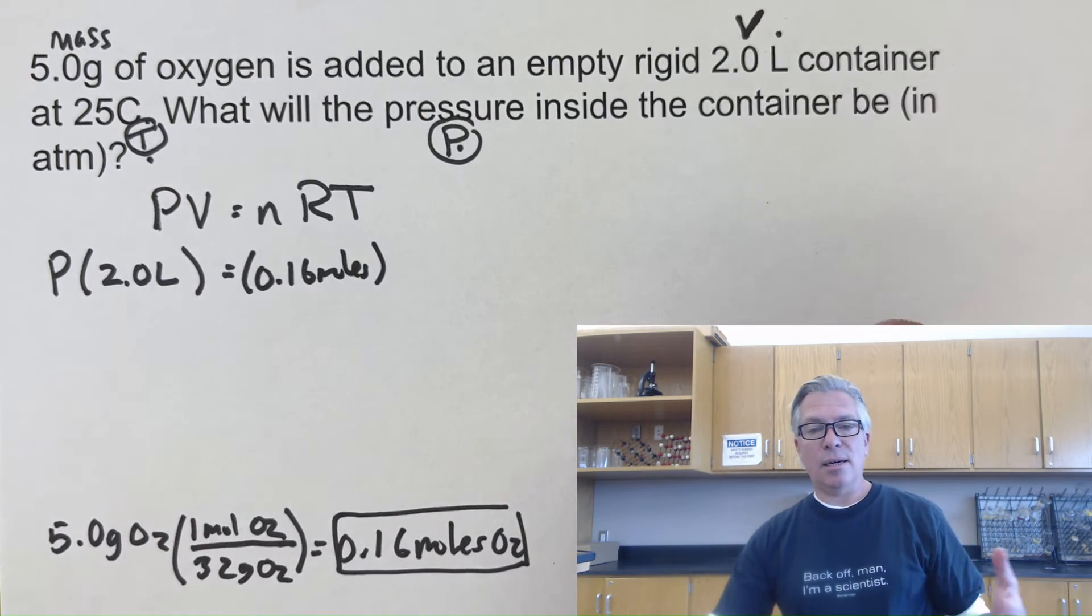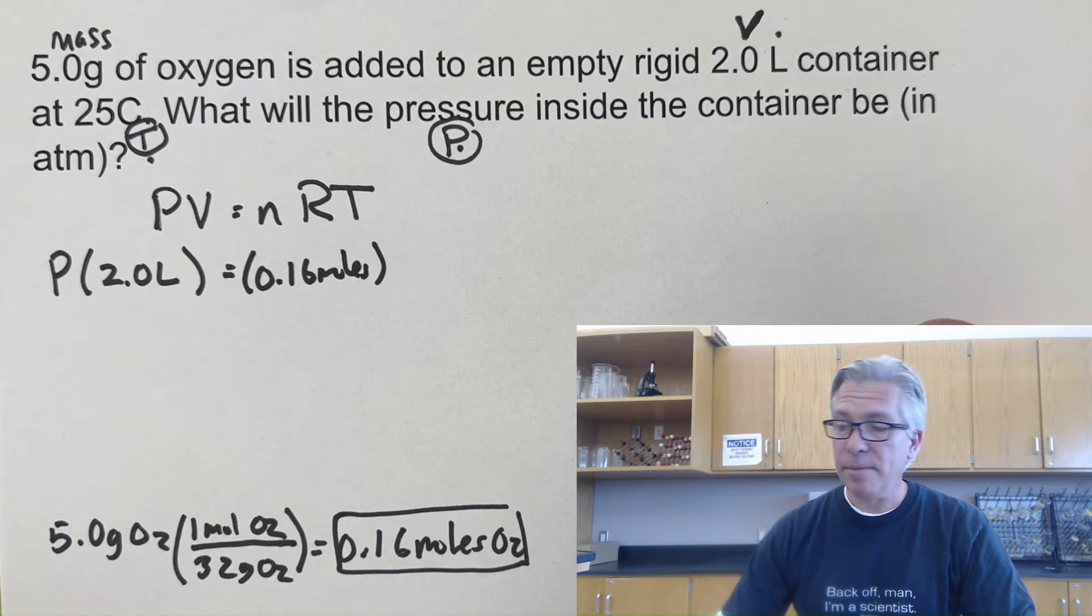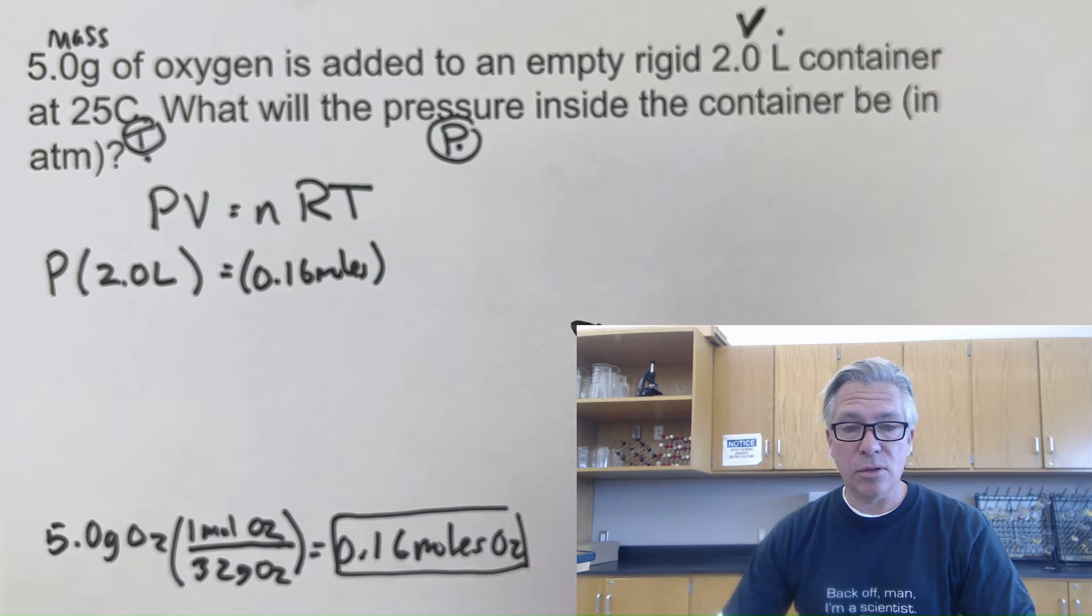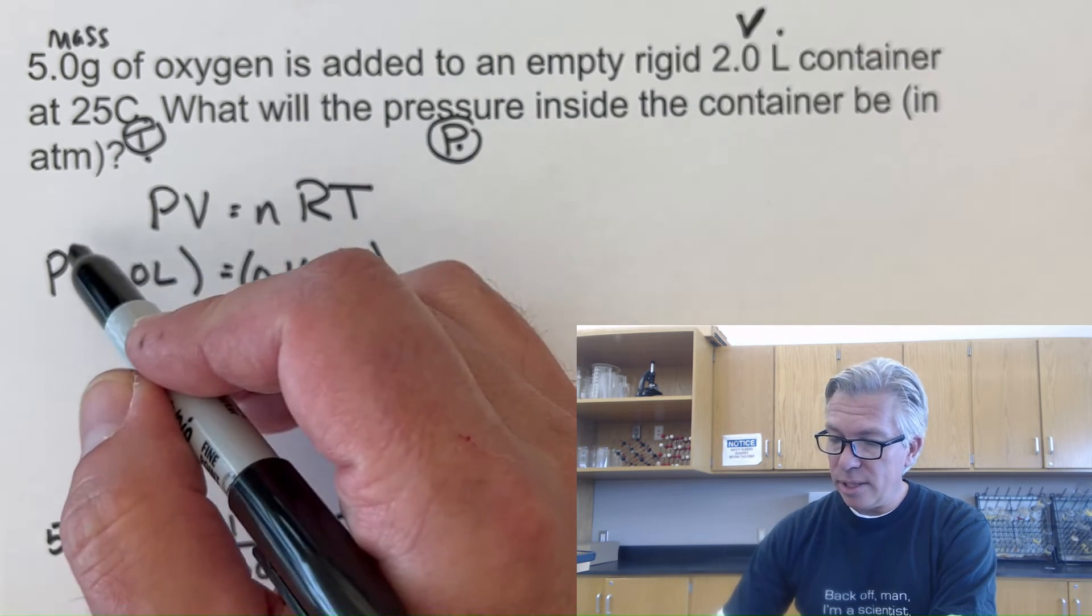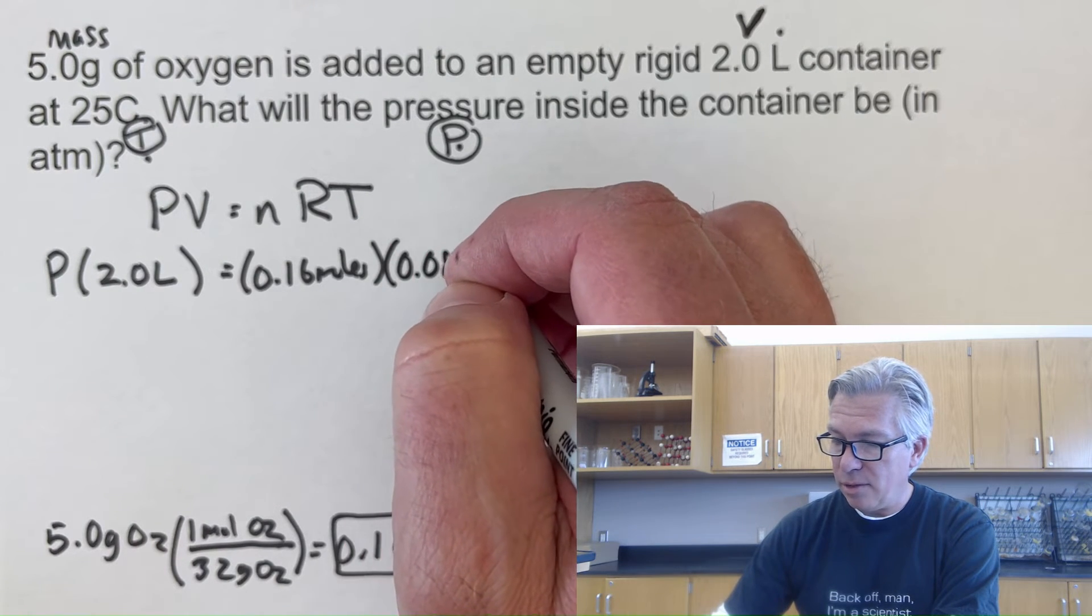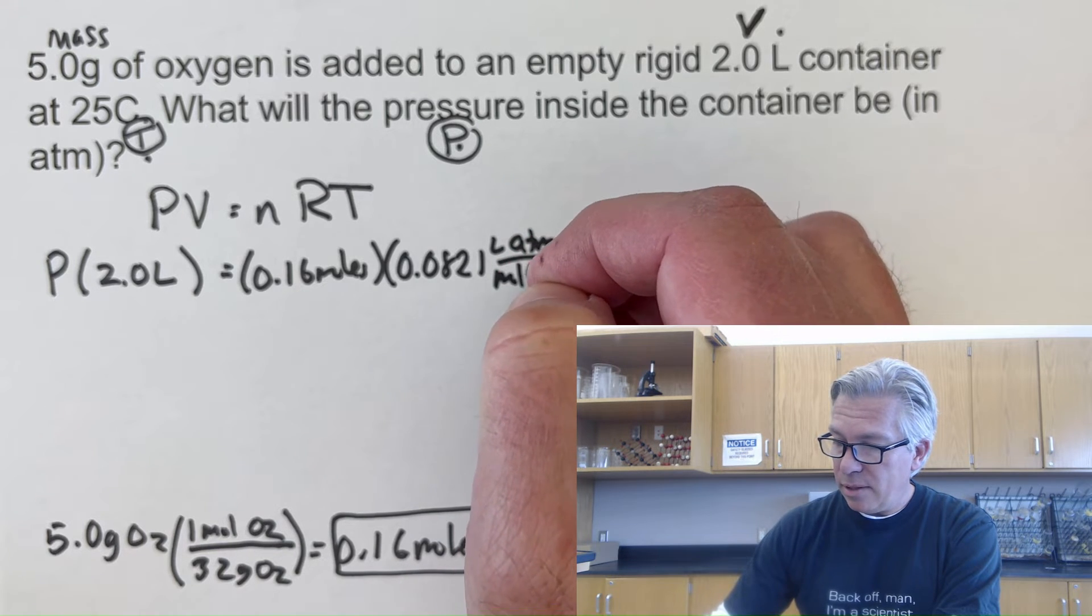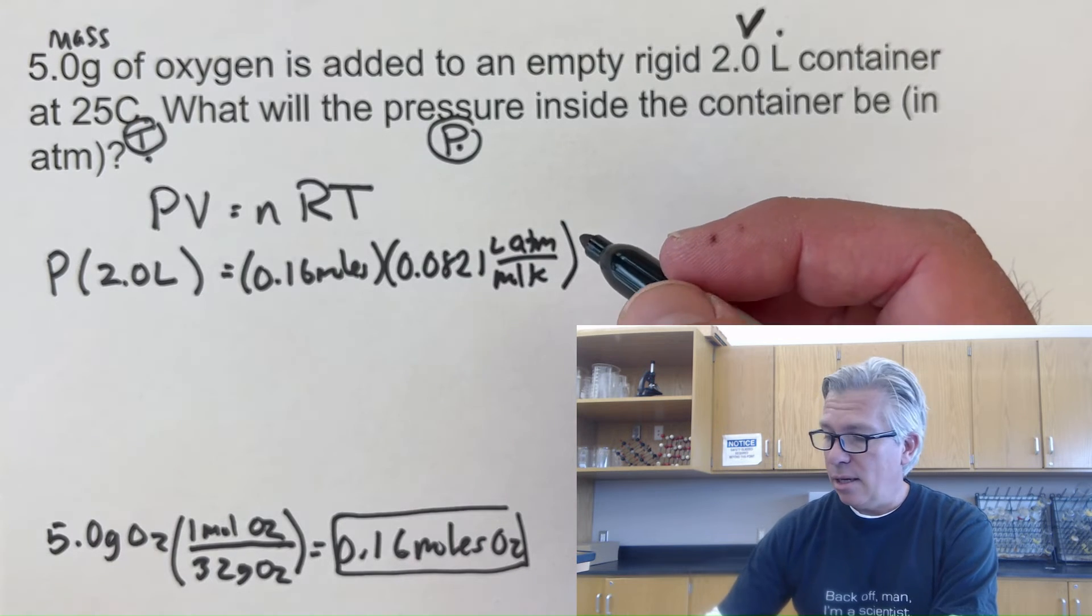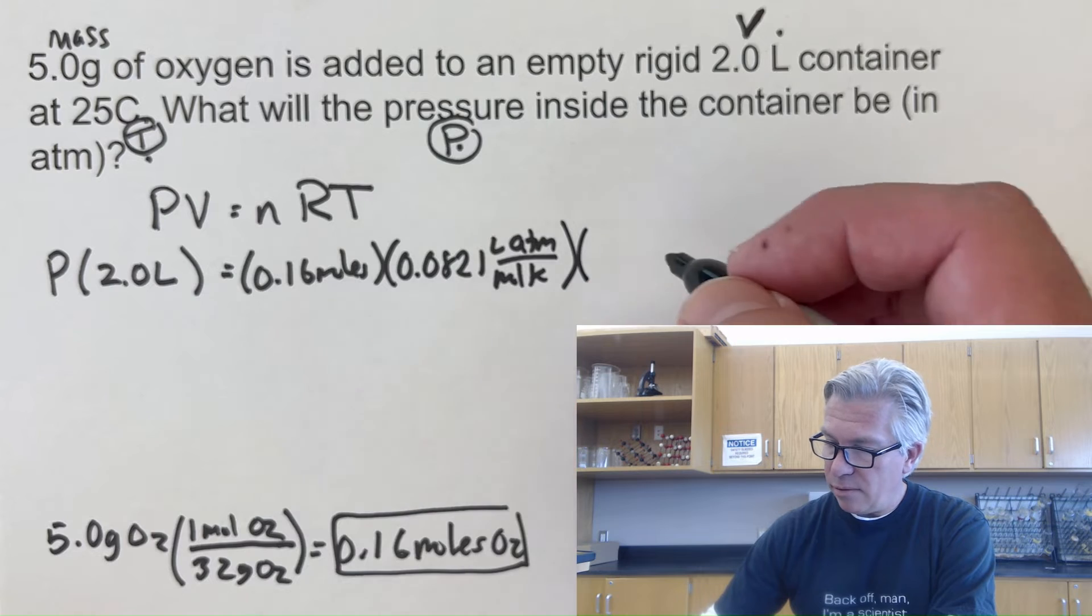You're going to need the ideal gas constant. Your teacher has probably told you that there's three or four, three of them for sure, commonly used, and they depend on what pressure unit you're in. The pressure is supposed to be in atmospheres, so I want to use the ideal gas constant that's in atmospheres: 0.0821 liters atmospheres per mole Kelvin. It probably seems superfluous to write all those units, but please do it. It makes your teacher very happy. The temperature is in Kelvins, so 25 plus 273 is 298 Kelvin.